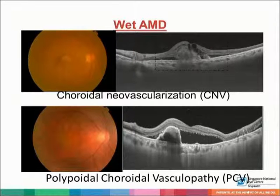This slide shows the presence of wet AMD. The upper column shows choroidal neovascularization and the lower shows polypoidal choroidal vasculopathy. The upper left picture shows the presence of subretinal blood as well as an area of exudation and elevation, which is confirmed on the optical coherence tomography on the upper right picture. In the lower left picture, there is presence of extensive exudation but with a minimal amount of drusen, also confirmed on the optical coherence tomography.